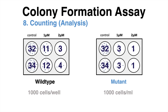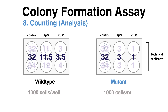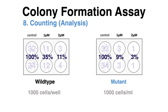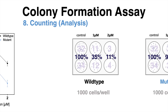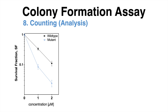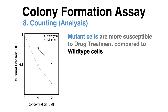Now the colonies can be counted. Of all technical duplicates, one can take the average. In both cases, the control is set to 100% since it is the maximum number of colonies that form without any treatment. The data can be plotted, and one can observe that mutant cells were way more susceptible to the drug treatment compared to the wild-type cells. That result can help to discover that specific mutations in tumors of cancer patients might be beneficial for treatments with certain compounds.